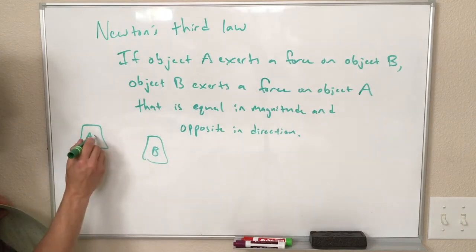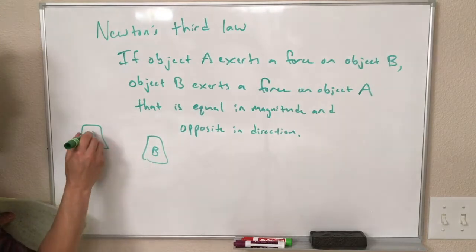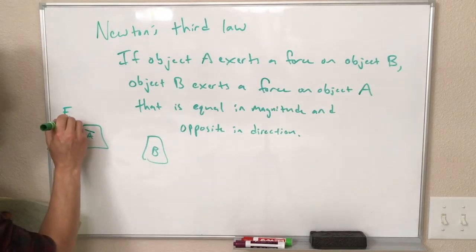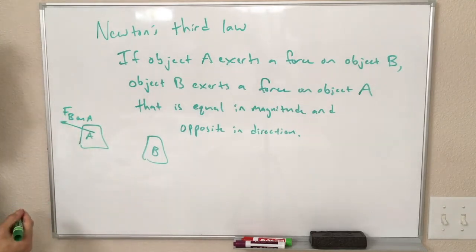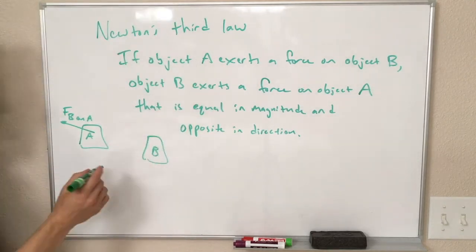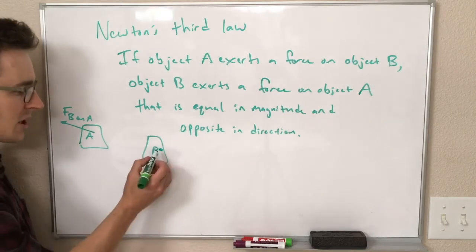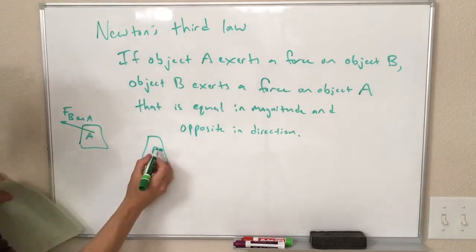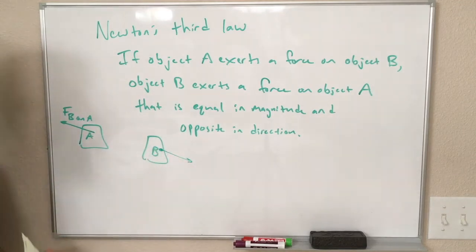So if object B is exerting a force on object A, if this is the force of B on A, so B is pushing on object A that way, Newton's third law tells us there must be a force on object B from object A that is in the opposite direction and is the same magnitude, the same number of Newtons.